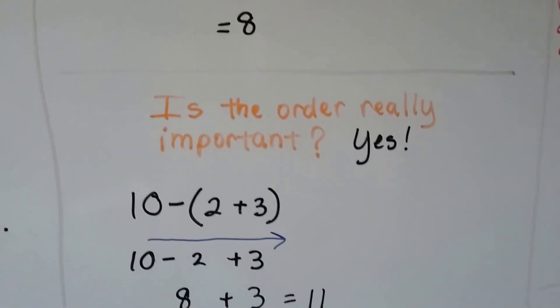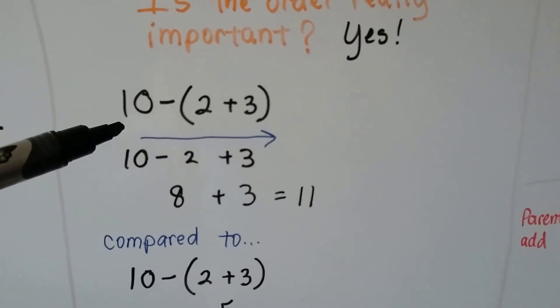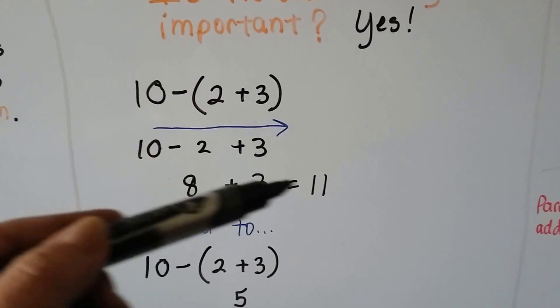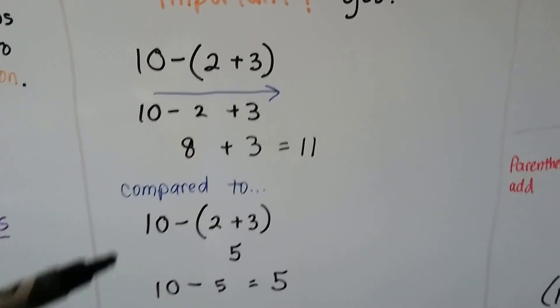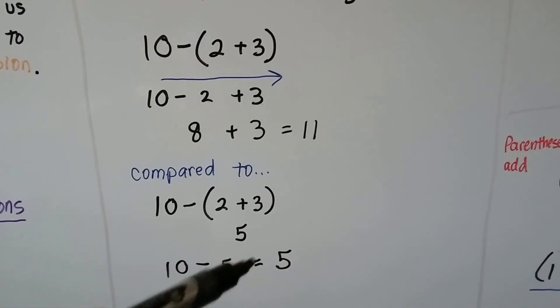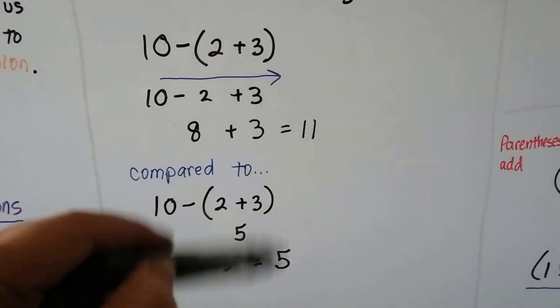And is the order really important? Yeah, it is. If we go straight across, we're going to have 10 minus 2, which is 8. And then adding the 3, we get an 11. But if we do it correctly with the order of operations, we do the parentheses first, we get a 5. And 10 minus 5 is 5.